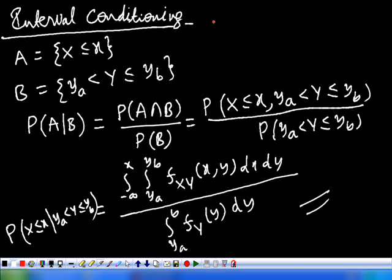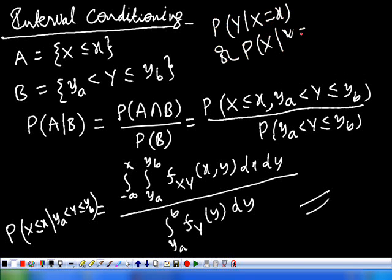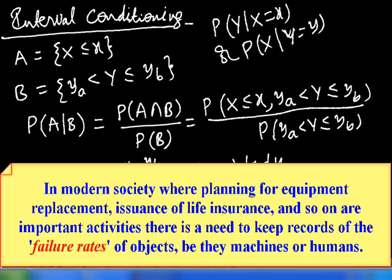In the previous case we wrote the probability of Y given X equal to x, or the probability of X given Y equal to y — that is, we obtained the probability of one random variable given the other random variable taking a single value. That is called the point conditioning. But here, the probability of X given Y lying in between two different values y_a and y_b — that is why it is called the interval conditioning. That is the difference between the point condition and the interval condition.